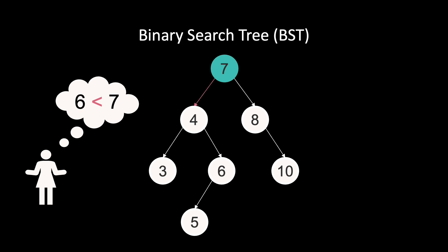When arriving at node 4, we must go right because 6 is larger than 4. Then we find node 6, which is the key we were looking for.